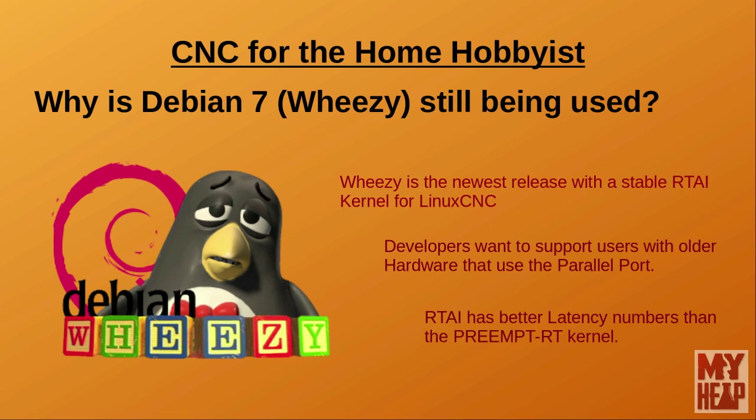LinuxCNC requires a real-time operating system to work. A real-time operating system is achieved in one of three ways under Linux: RTAI, RT Preempt, and Xenomai. Of these three real-time kernels, only two are heavily used for LinuxCNC — these being RTAI and RT Preempt. Now, there are differences between these two that may be the basis for determining which to use. RTAI gives less real-time latency as compared to RT Preempt, particularly on older hardware.